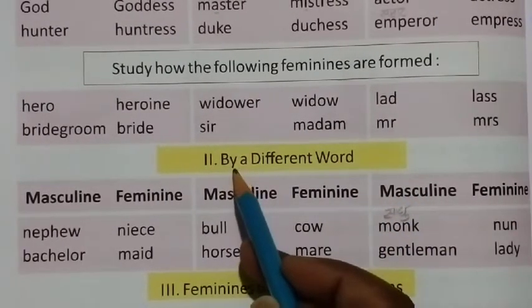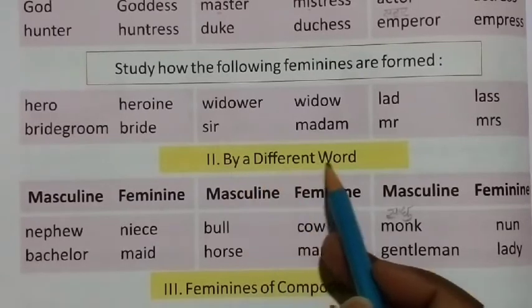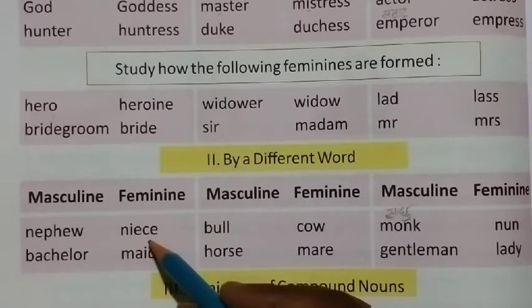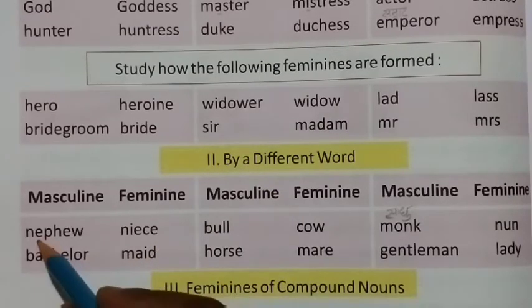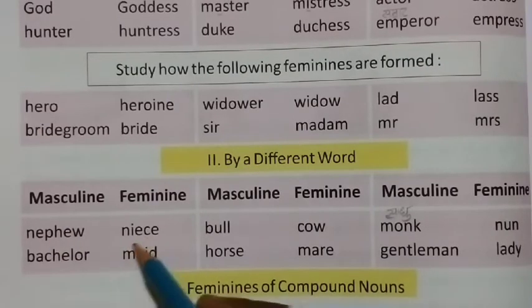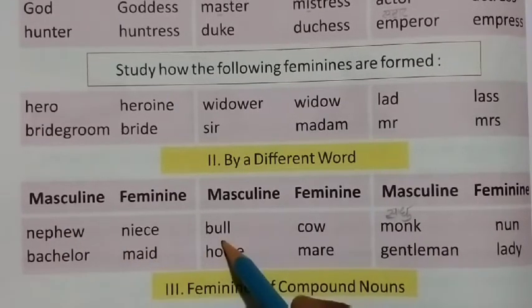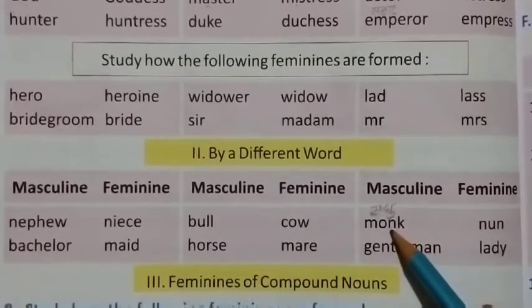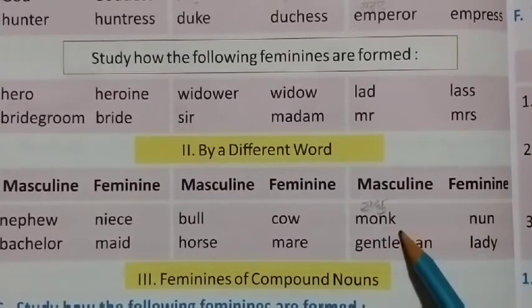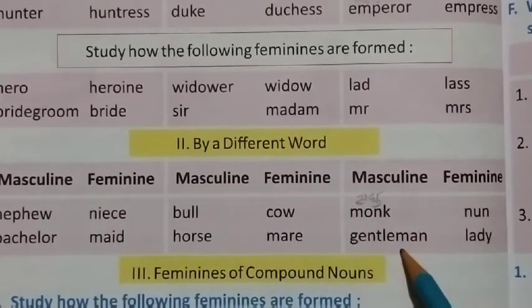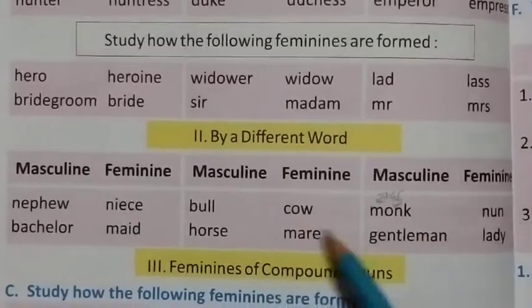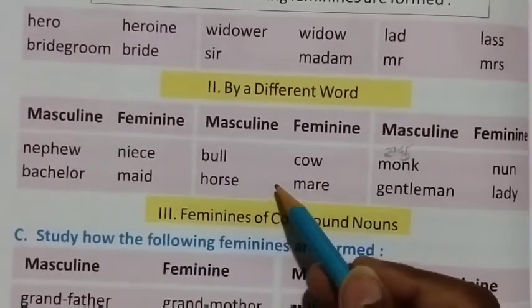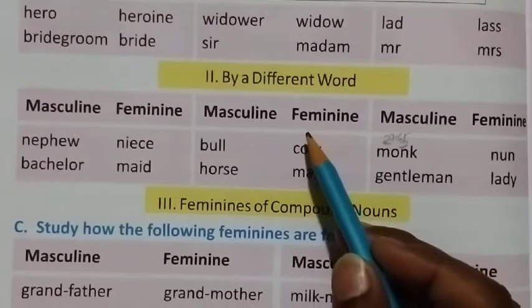The second way is by using a completely different word. The masculine gender changes entirely to form the feminine gender. For example: nephew becomes niece, bachelor becomes maid, bull becomes cow, horse becomes mare, monk becomes nun, and gentleman becomes lady.